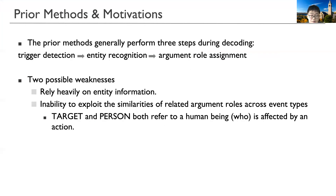Prior methods generally perform three steps in a pipeline-based approach: trigger detection, entity recognition, and assigning argument roles to entities. But there are two possible weaknesses. First, they rely heavily on entity information and annotations, which may cause error propagation. Second, they ignore similarities of different but semantically related argument roles during this process.